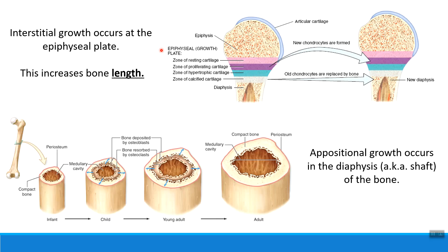We also need to grow our bones wider, or increase their width. We do this in the diaphysis, or the shaft of the bone. Important note: growing our bones longer happens in the epiphyses, while growing our bones wider happens in the diaphysis, the shaft.